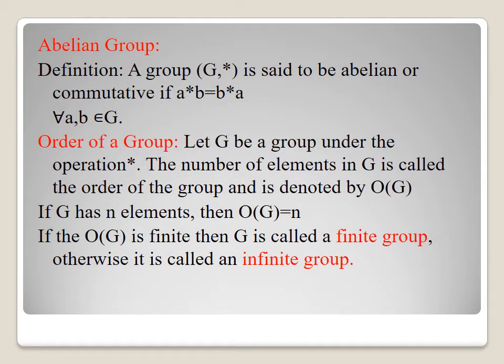Abelian group definition: a group (G, star) is said to be abelian or commutative if a star b equals b star a for all a, b in G. Order of a group: let G be a group under operation star. The number of elements in G is called the order of the group, denoted O(G). If G has n elements, then O(G) equals n. If the order is finite, G is called a finite group; otherwise, it is called an infinite group.